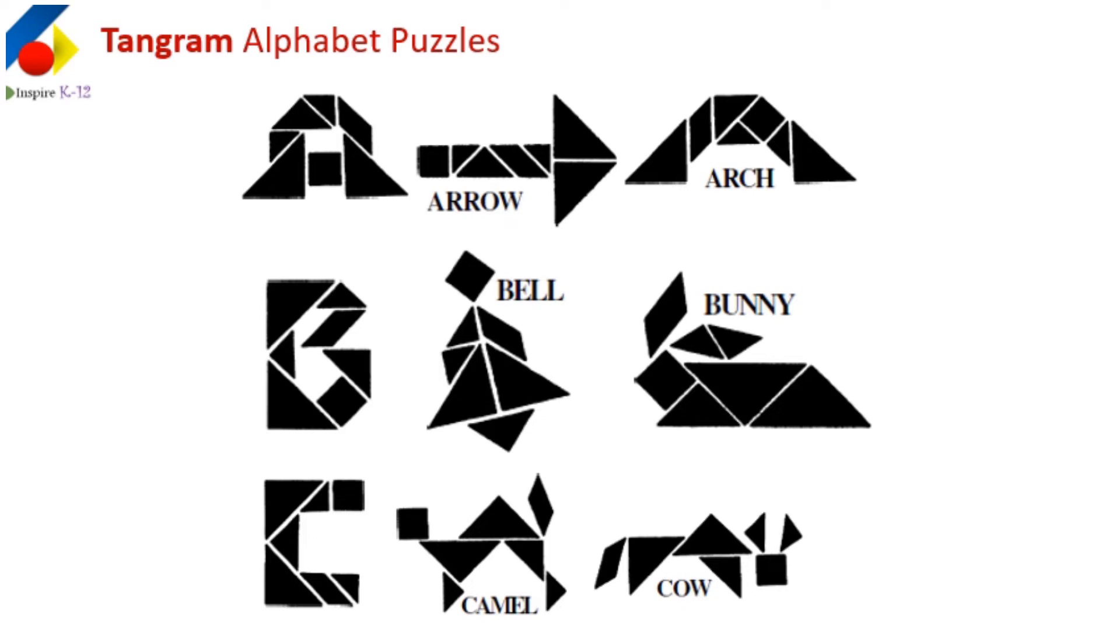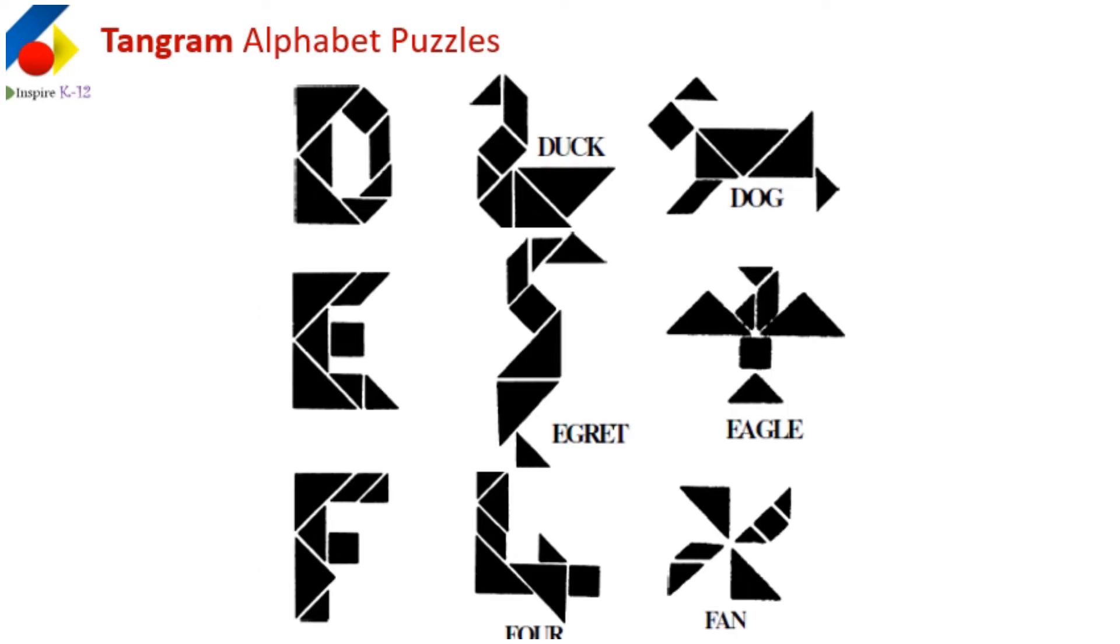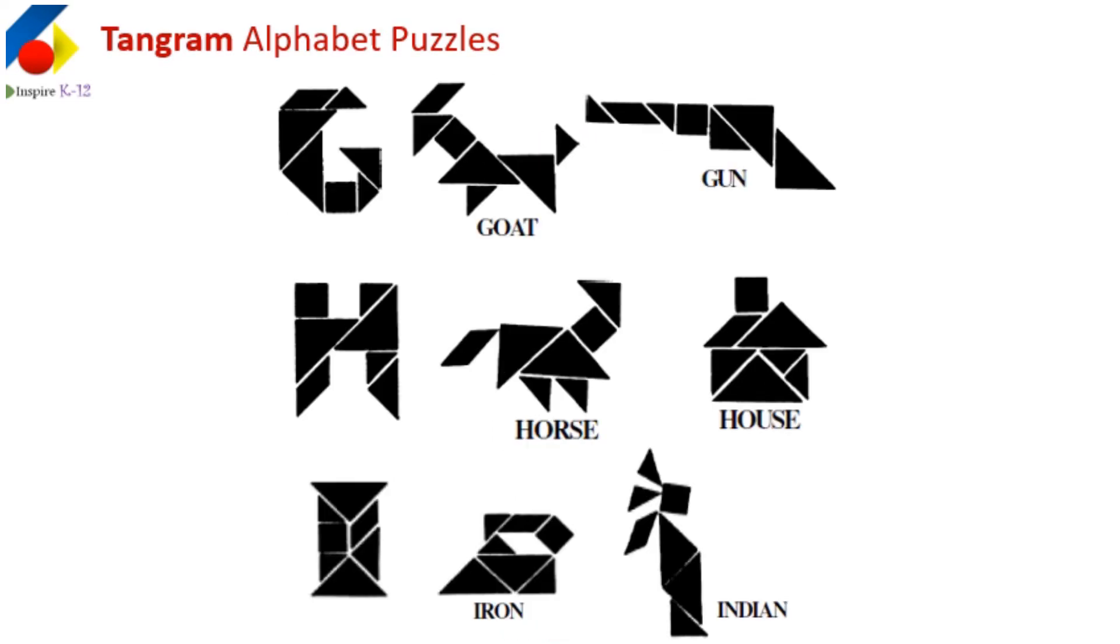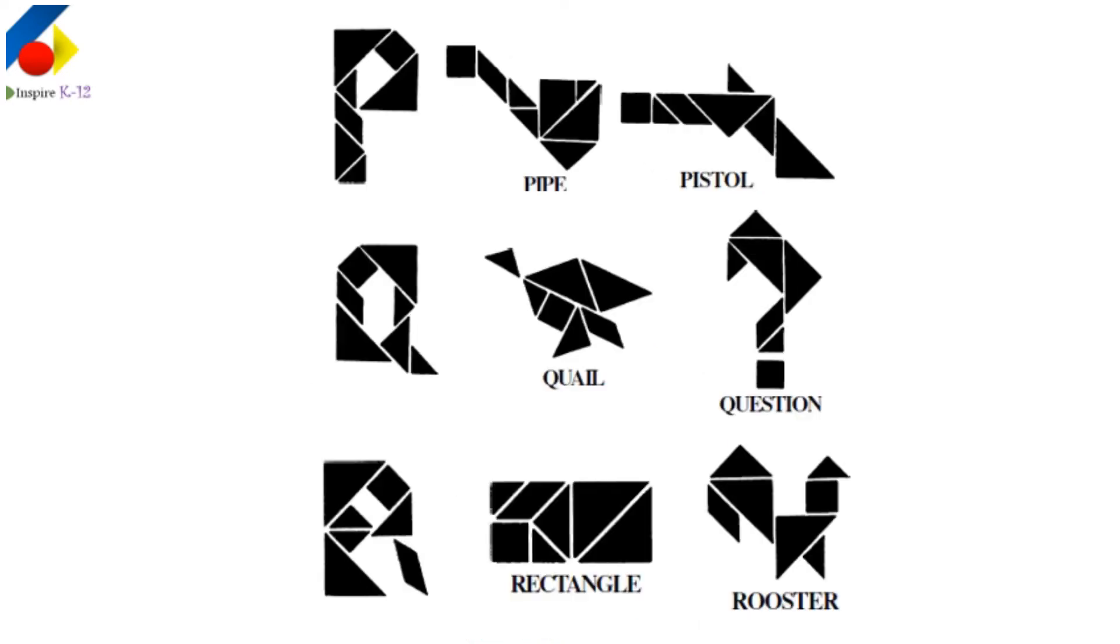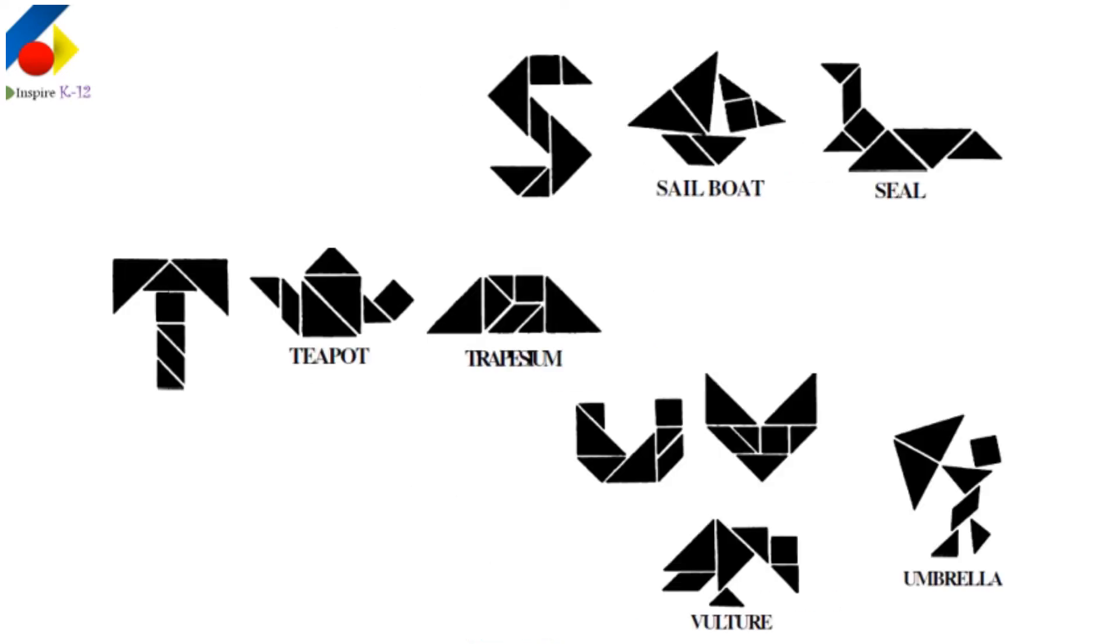For example, you can make A for arrows, B for bird, C for camel and D for duck. So alphabets and pictures with them. So it's very, very interesting thing which you can use. I'll just go through.